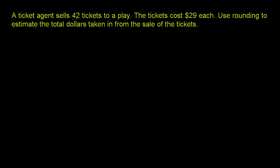A ticket agent sells 42 tickets to a play. The tickets cost $29 each. Use rounding to estimate the total dollars taken in from the sale of the tickets. If we wanted the exact number, we could say 42 times 29 and work out the multiplication. But they essentially want us to be able to do it in our head — we want to round the numbers first, and then multiply.